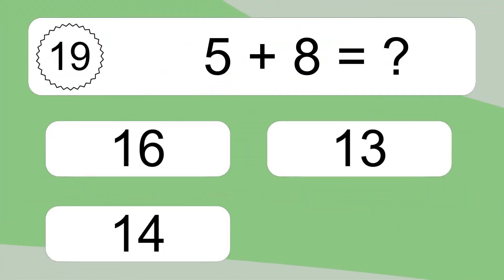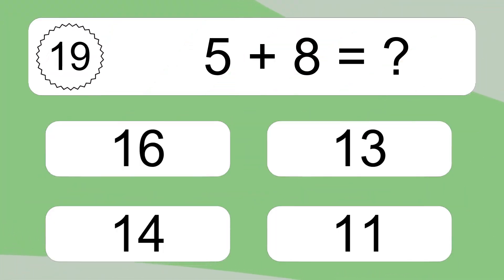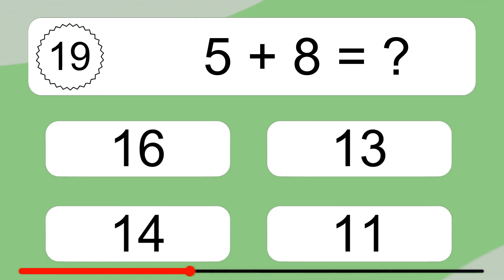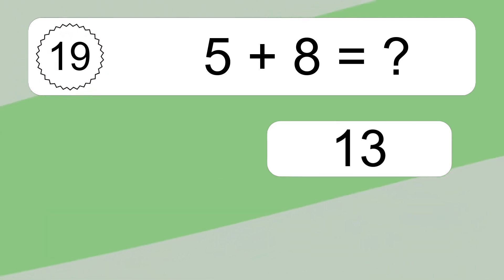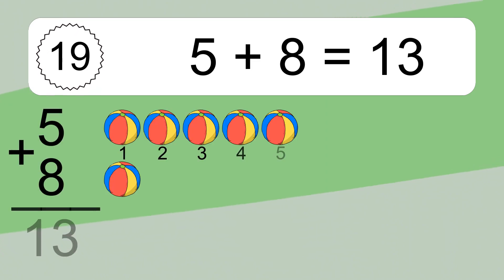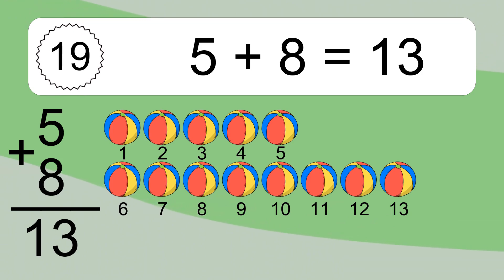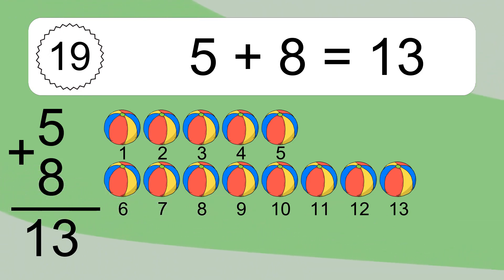5 plus 8 equals what? 5 plus 8 equals 13. Let's count it: 1, 2, 3, 4, 5, 6, 7, 8, 9, 10, 11, 12, 13.